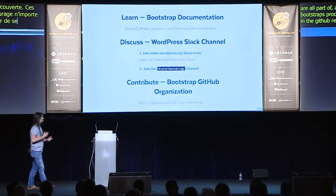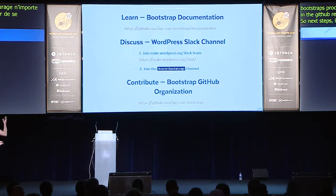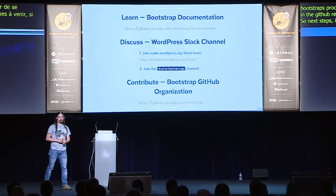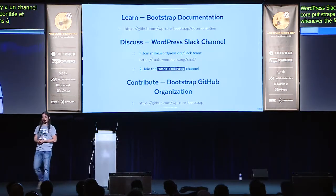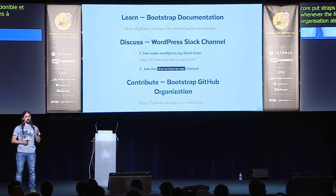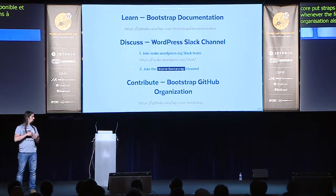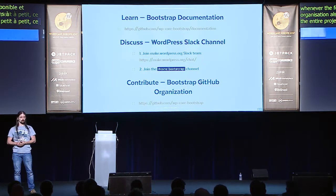So next steps: if you want to know more about this, the wp-core-bootstrap GitHub repository is where all the stuff is happening for this feature project, so please look in there. I'm happy for anyone that wants to contribute. There's a WordPress Slack channel in the makewordpress.org Slack — a team called core-bootstrap — where I should be always available and will try to post updates whenever the feature project has new news to communicate. The GitHub organization also contains other repositories and will slowly be the place where the entire project is built up until the merge proposal. Thank you.